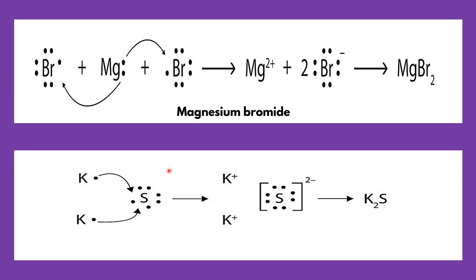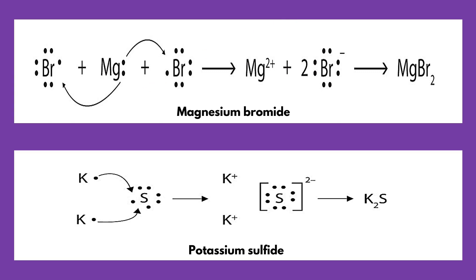On the second example, potassium has a valence electron of 1 while sulfur has a valence electron of 6. Since sulfur needs 2 electrons to have 8 valence electrons, it needs 2 potassium atoms to become stable. This bond forms potassium sulfide. It is used as a component of pyrotechnics — particularly used in Asia to manufacture fireworks.